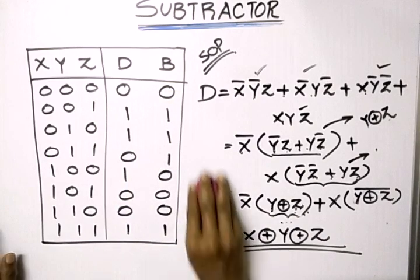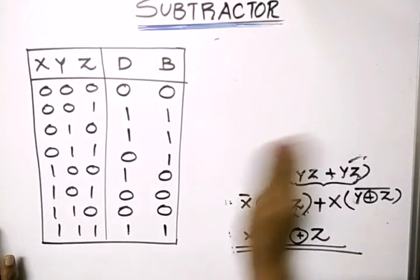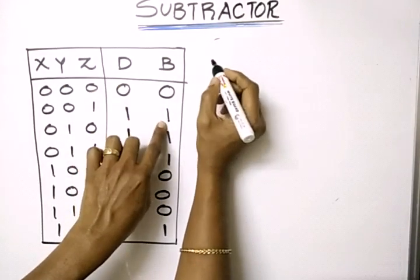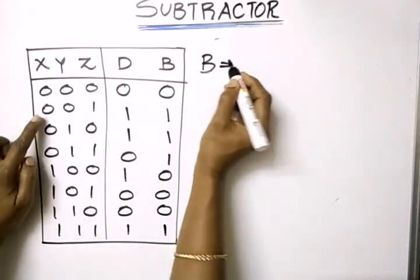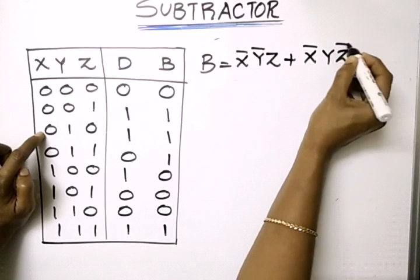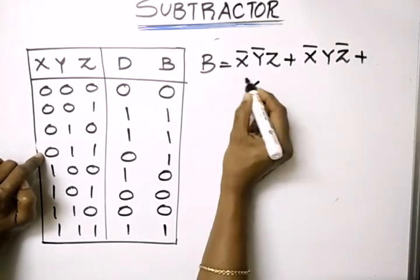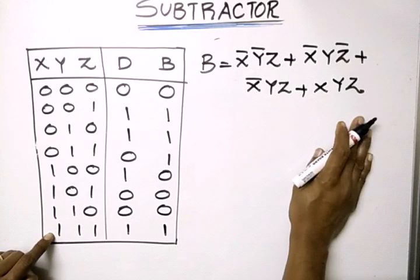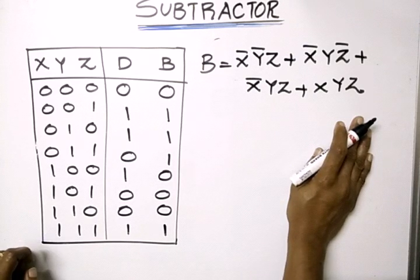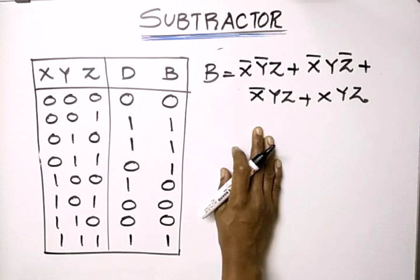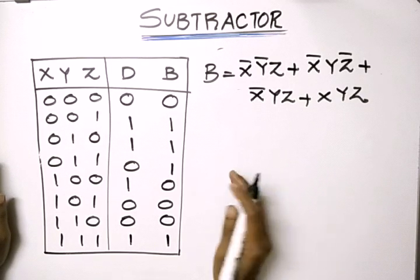Next we derive the expression for borrow. Checking the borrow column, B equals 1 for certain rows. The corresponding canonical SOP product terms are X̄ Ȳ Z, or X̄ Y Z̄, or X Y Z. This is the canonical SOP expression for borrow, and we need to reduce it to obtain the simplified standard form to draw the logic circuit.